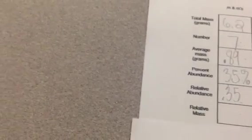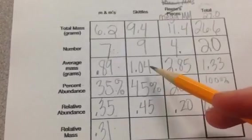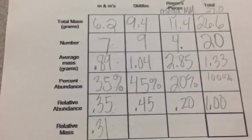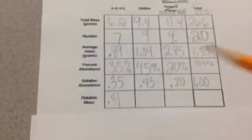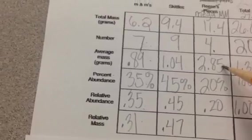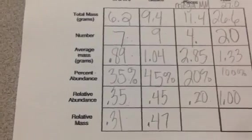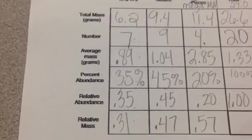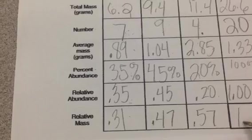I think I did something wrong on my calculator. Hold on. 0.35 times 0.89 equals 0.31. The next one is 0.45 times 1.04. It's going to give you 0.47. 0.20 times 2.85 is 0.57. And then 1 times 1.33 is 1.33.